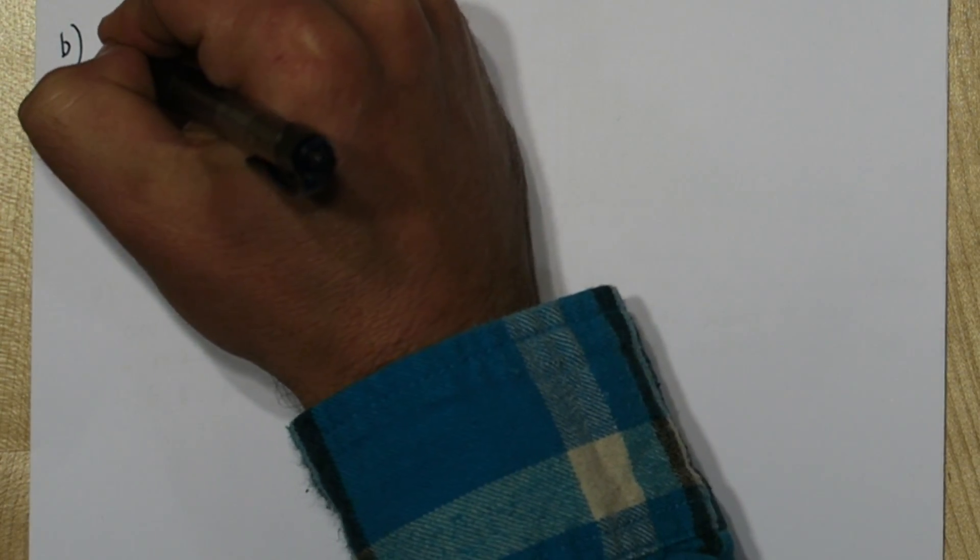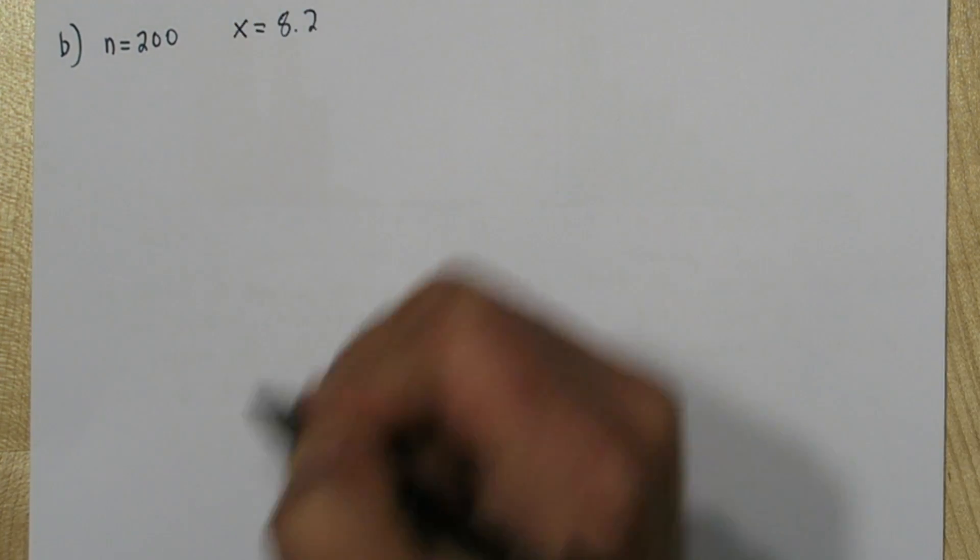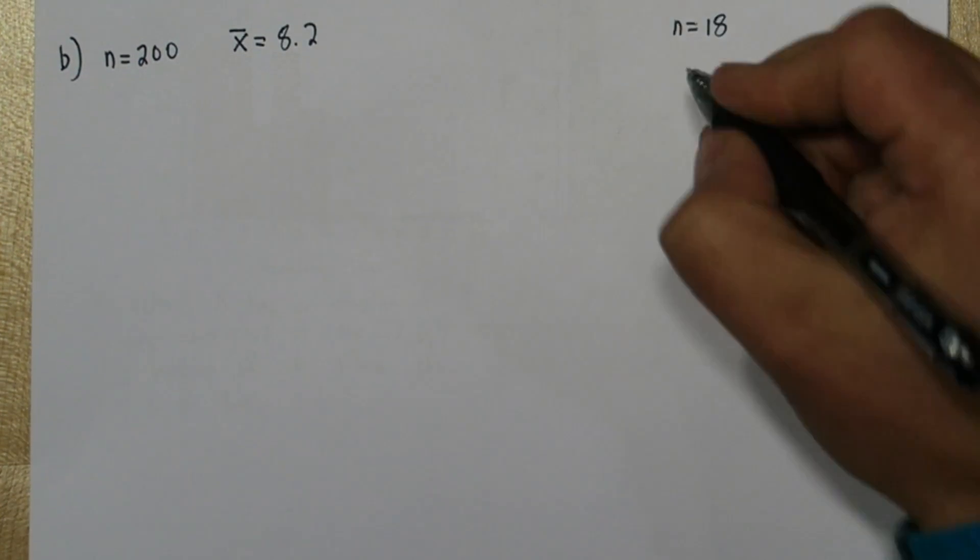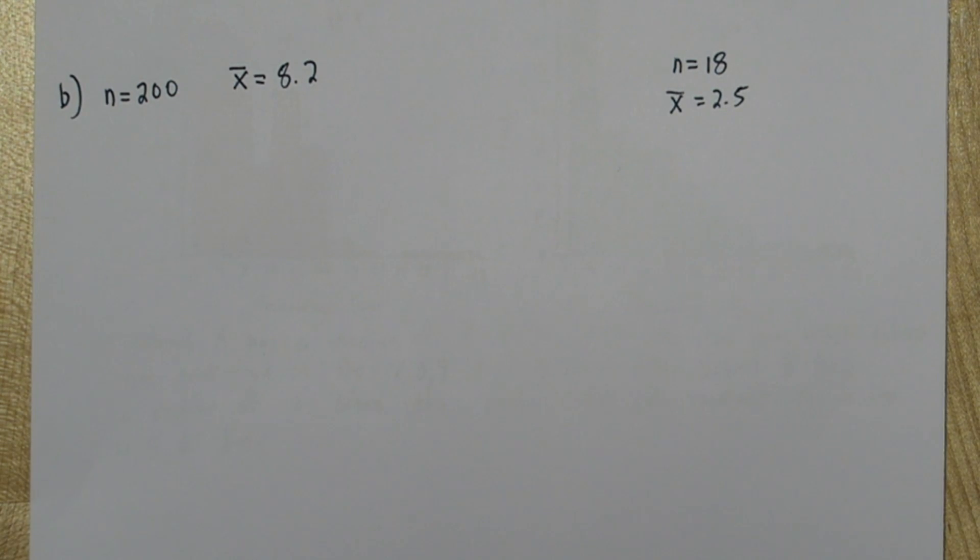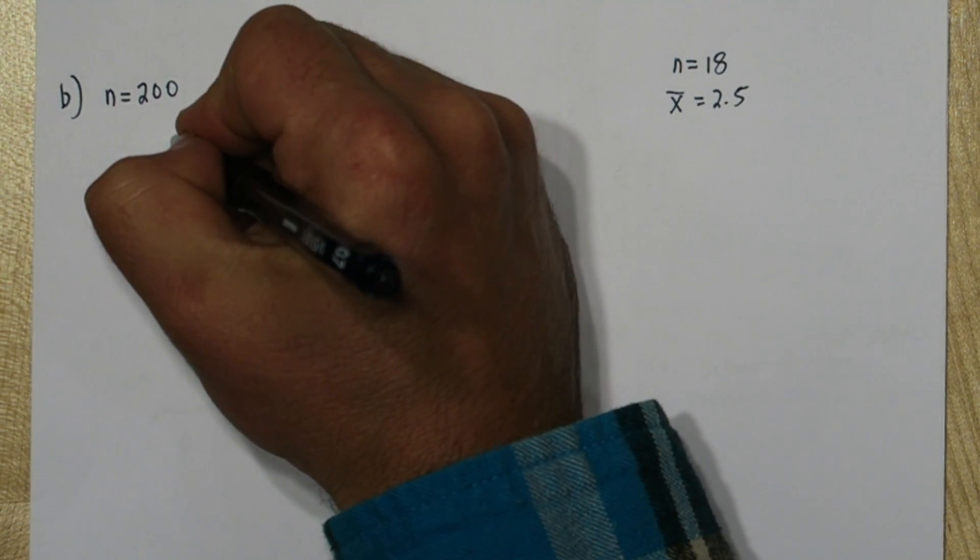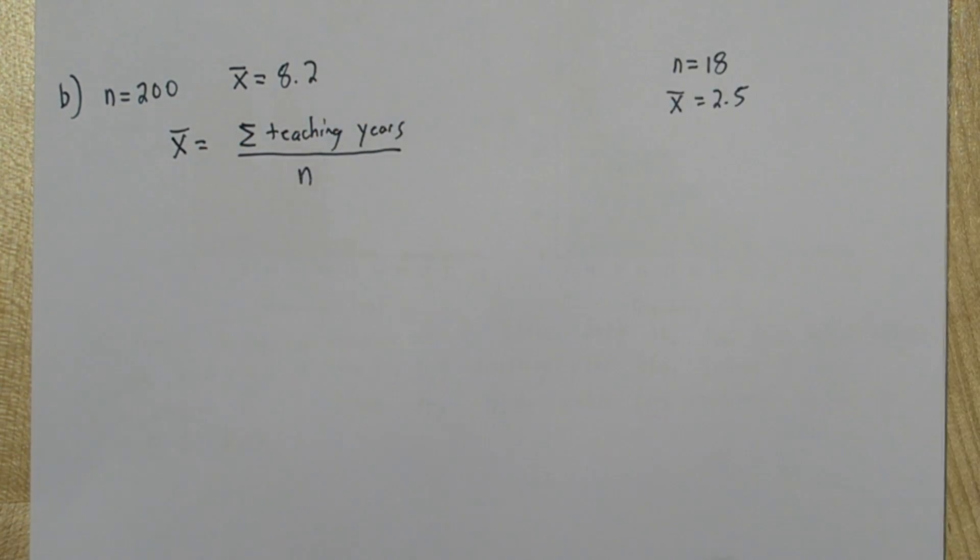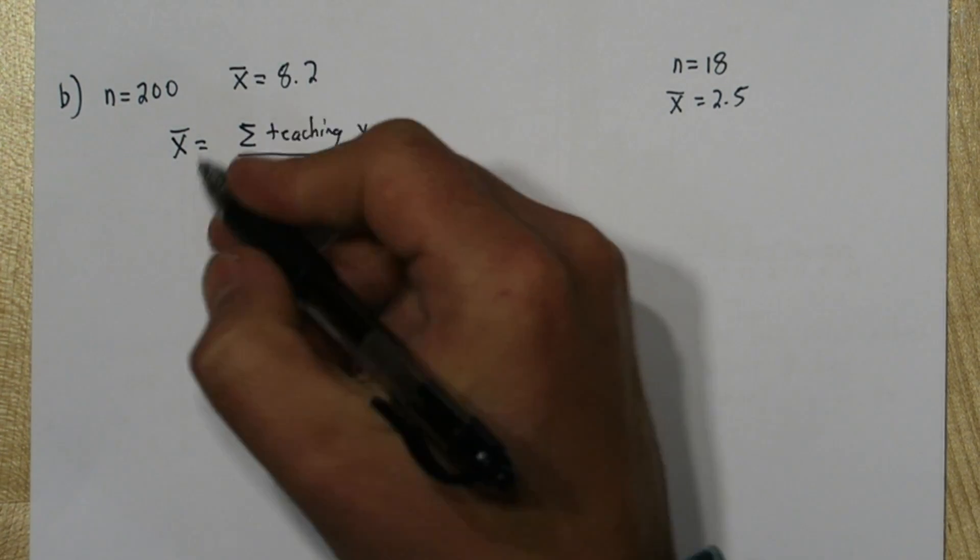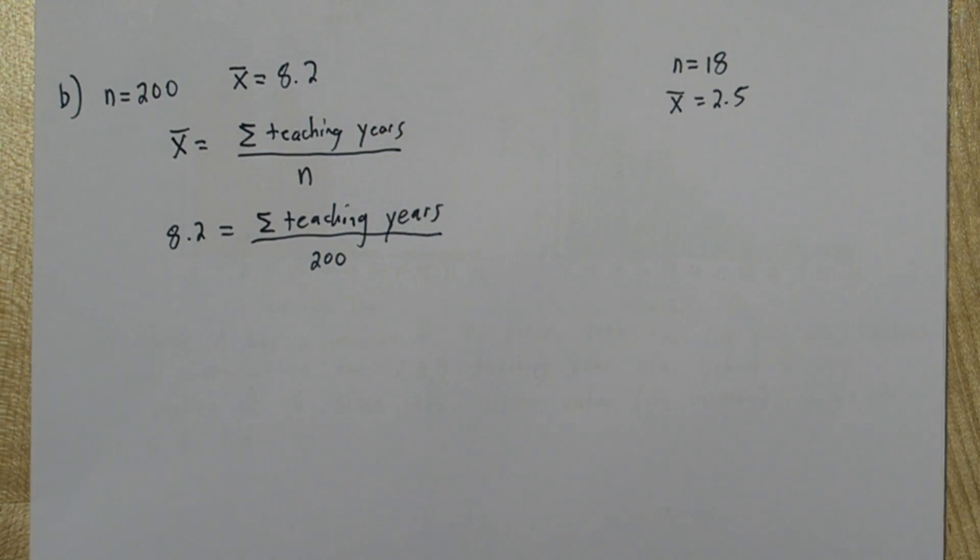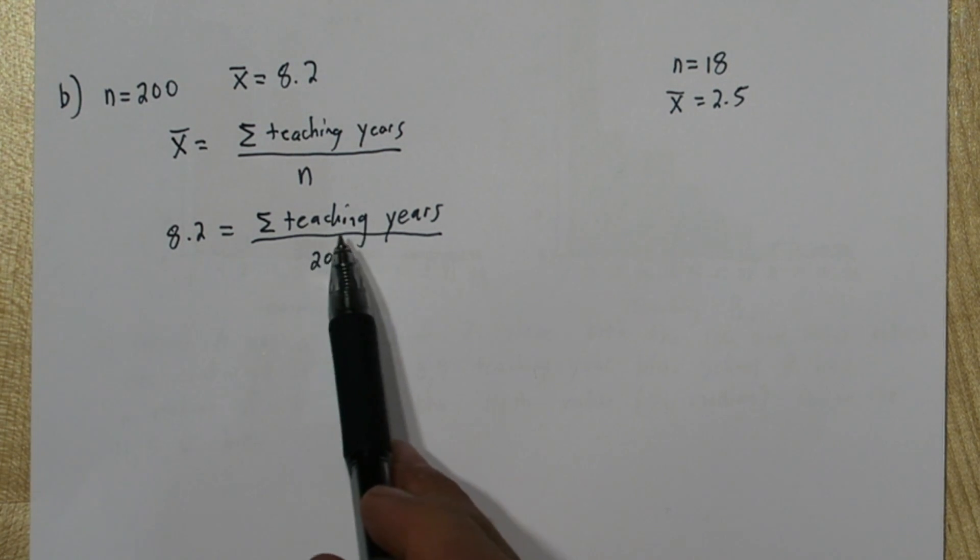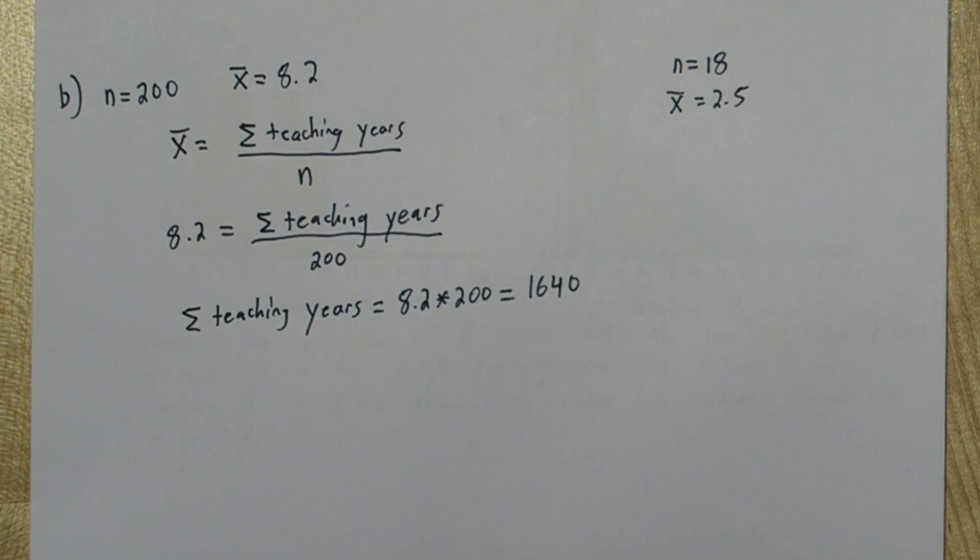Now, in part B, we know the sample size for high school A was 200, and the stem of the problem tells us that the mean was 8.2. We're given some additional information. There's 18 teachers who weren't included, and they have a mean of 2.5. We're going to try to combine these into a new mean. So let's think about how means are actually calculated. The mean is the sum of the teaching years divided by the sample size. So originally, this 8.2 was calculated by adding up all the teaching years and dividing by 200. So if we multiply both sides by 200, that will actually tell us the combined sum of the teaching years, which turns out to be 1,640.